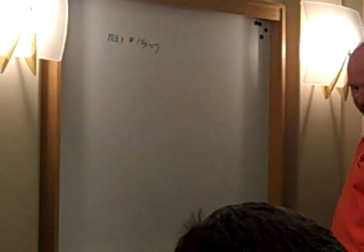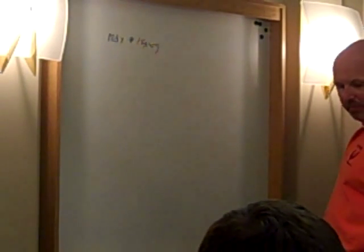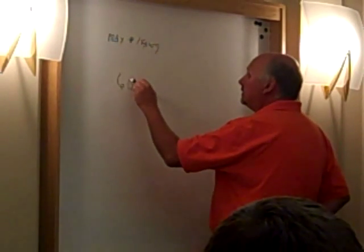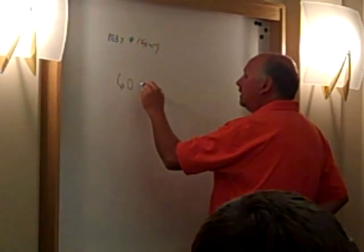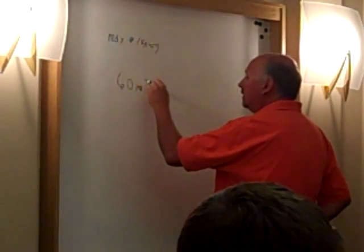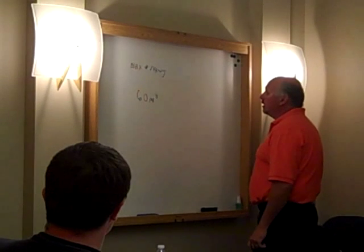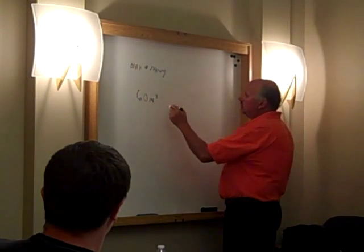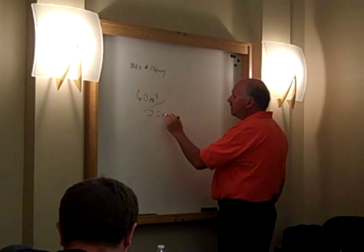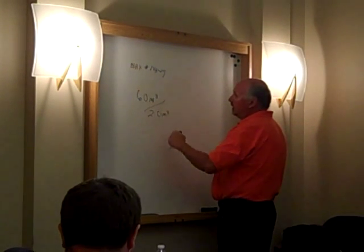And it gives you a 60 cubic inch box. How would we do this problem? We divide 60 by 2.0, by 2.0 inches cubed.